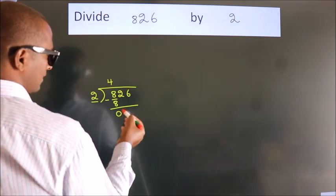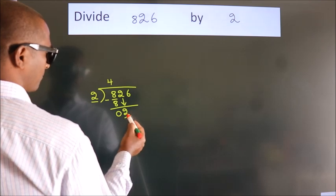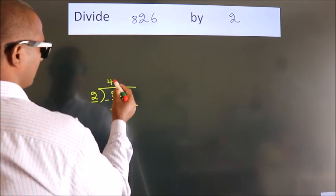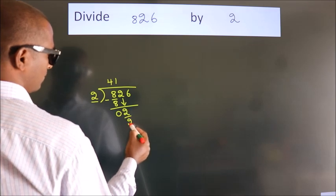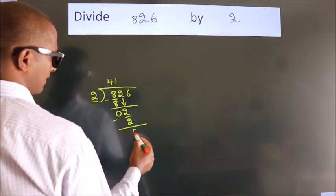After this, bring down the beside number, so 2 down, so 2. When do we get 2? In 2 table, 2 ones are 2. Now, we subtract, we get 0.